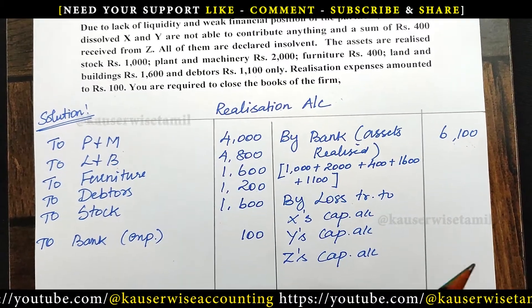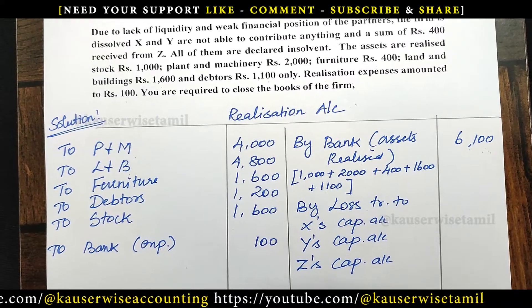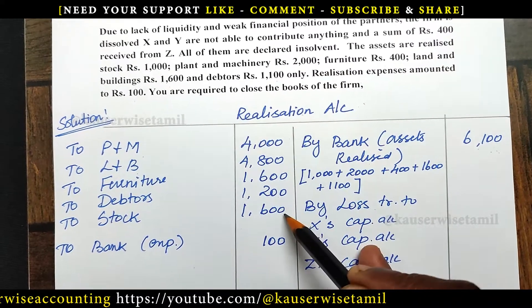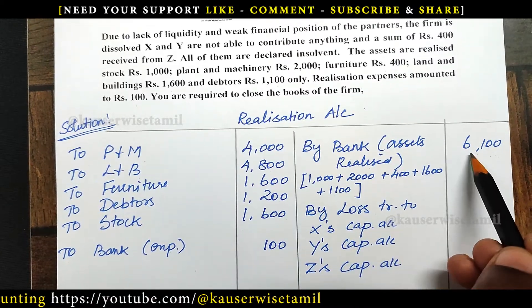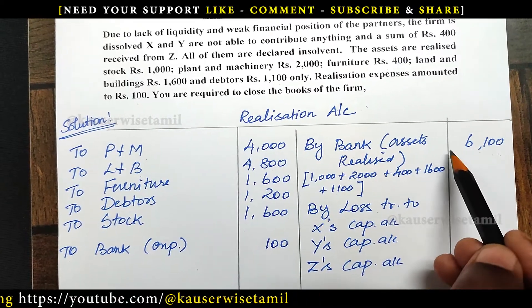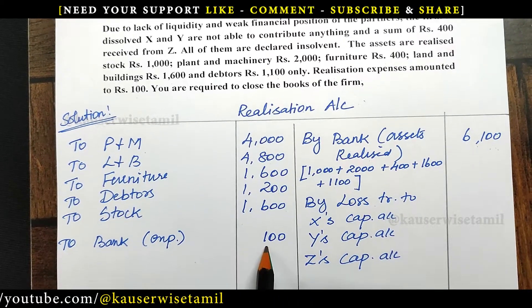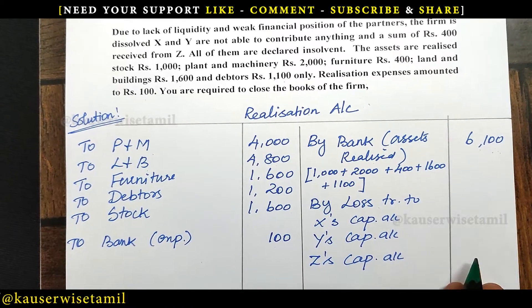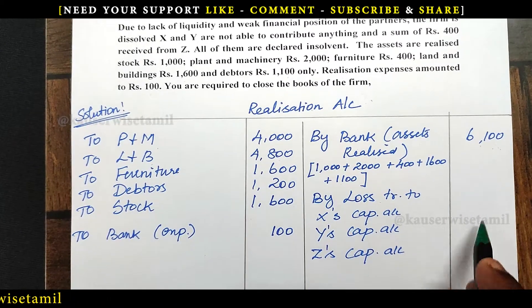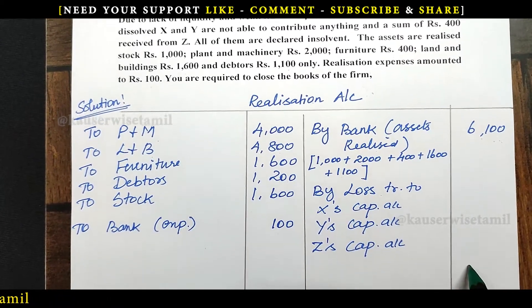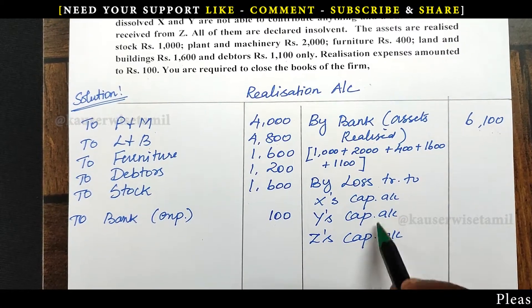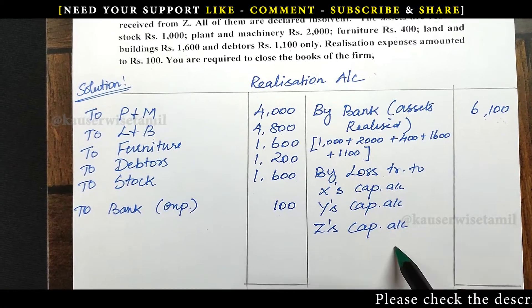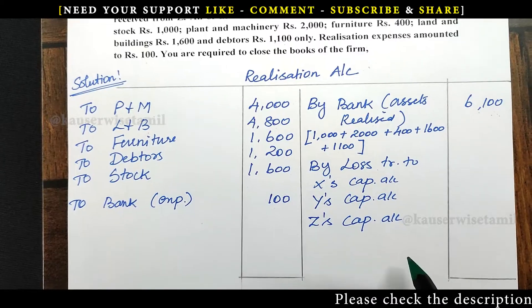When all the partners are insolvent, this is the procedure. Assets 1100, debit 1100, realization 1100. Realization expense is also debited at 100. Now the balancing figure is the loss. The loss is transferred to all the partners' capital accounts according to their profit sharing ratio.